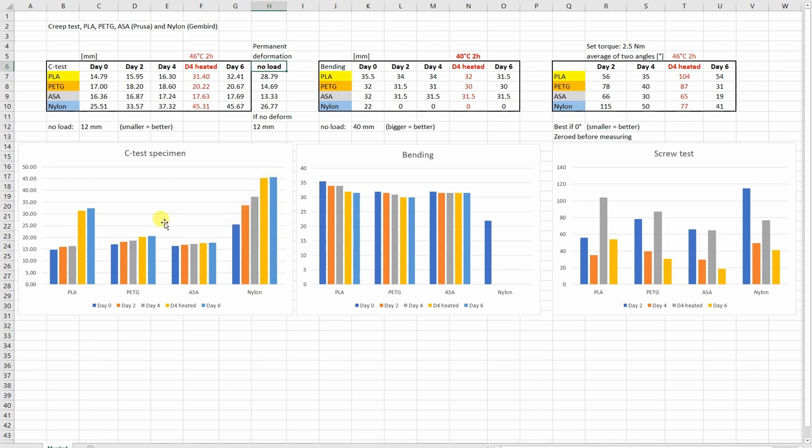And in this graph we can see that the nylon has the biggest deformation here, very interesting. The ASA, the smallest deformations, even hardly noticeable after this heating. PETG a little bit bigger deformations compared to the ASA but not big difference. But PLA, you can see this big creeping after it was exposed only two hours to 45-46 degrees Celsius.